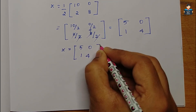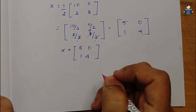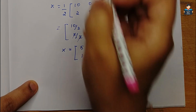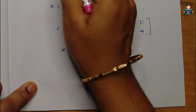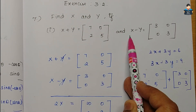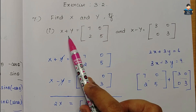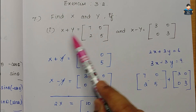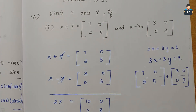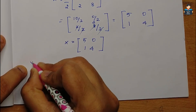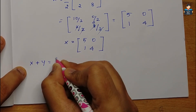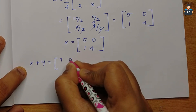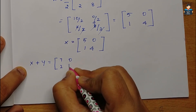To find y, we use any one of the original equations. We take x plus y equals [[7,0],[2,5]] and substitute the x value we just found.